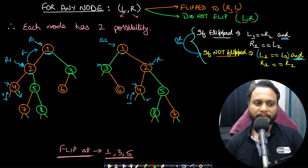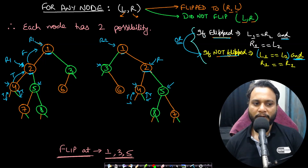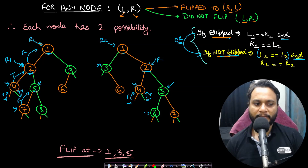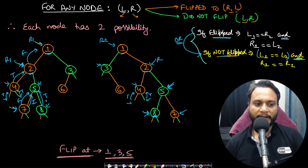In either case — flipped or not flipped — the leaf node returns true. A true is returned for node 2. Now checking the right side: we make a call to the right side of R1 (node 5) and the right side here as well. At node 5, assuming no flip, we go to 7 and 8 — they are not equal, returning false. Assuming a flip at node 5, we match left of 5 with right of second 5, and right of 5 with left of second 5. Both pairs are matching leaf nodes, returning true AND true, which gives true.